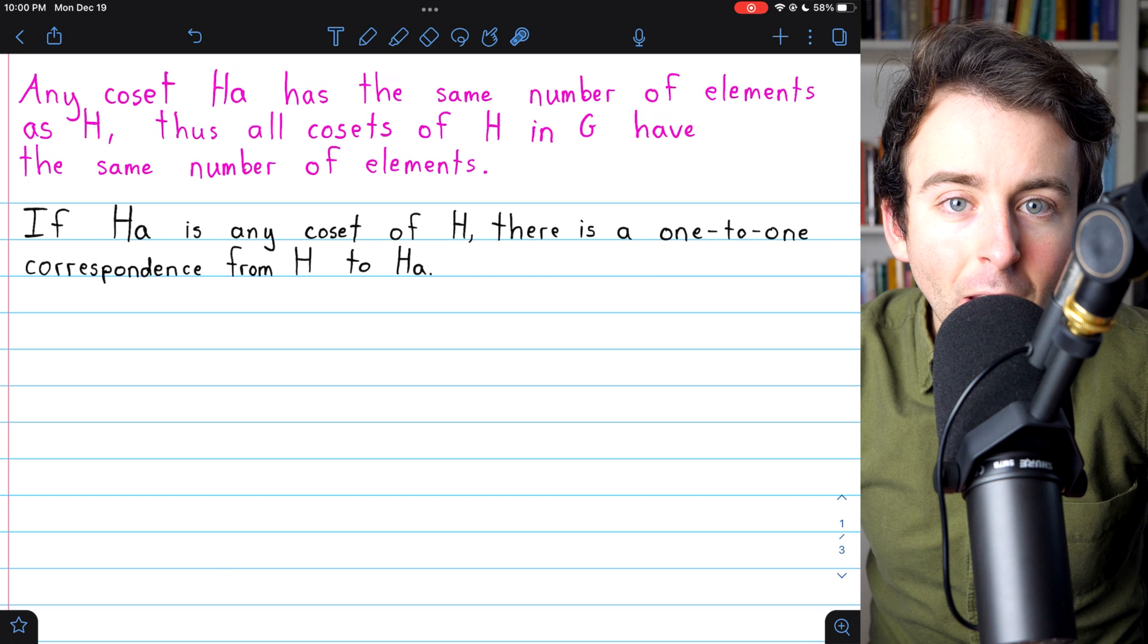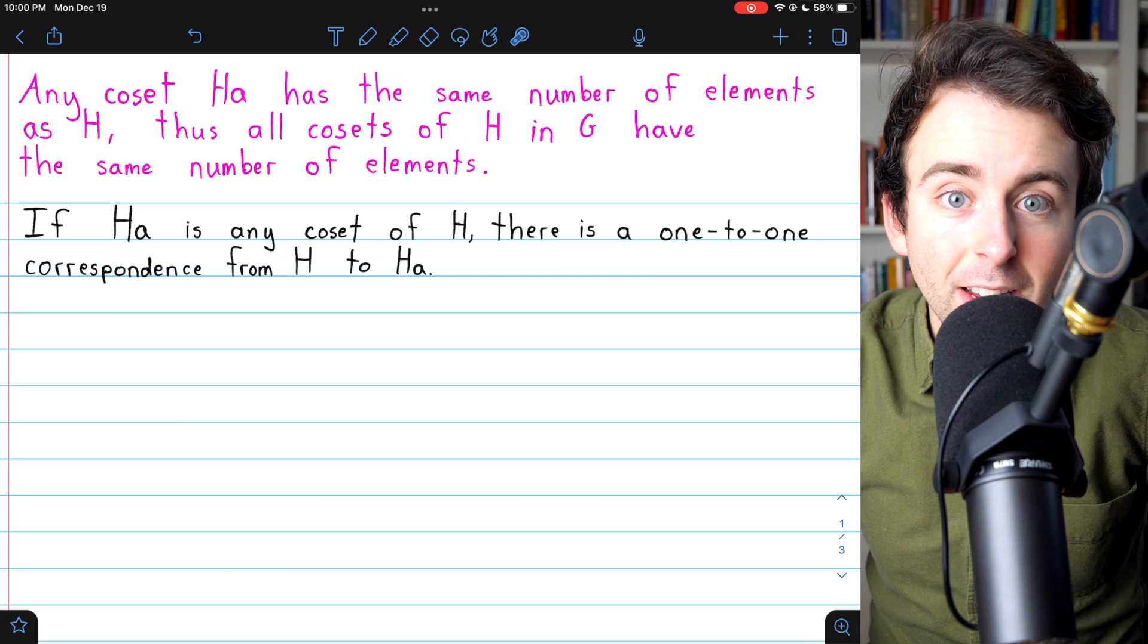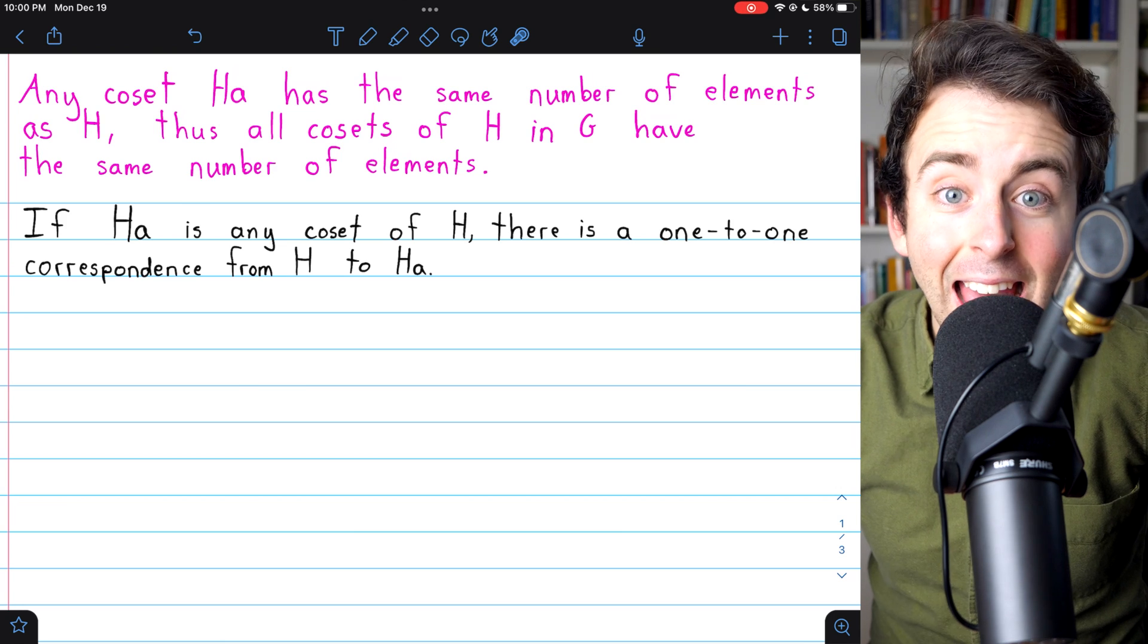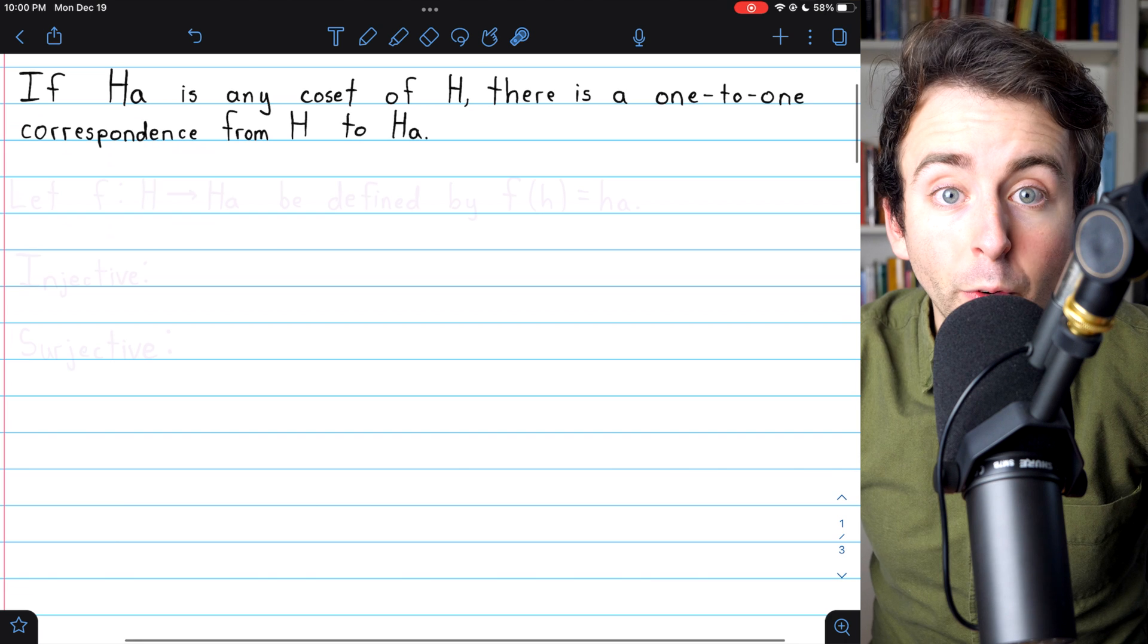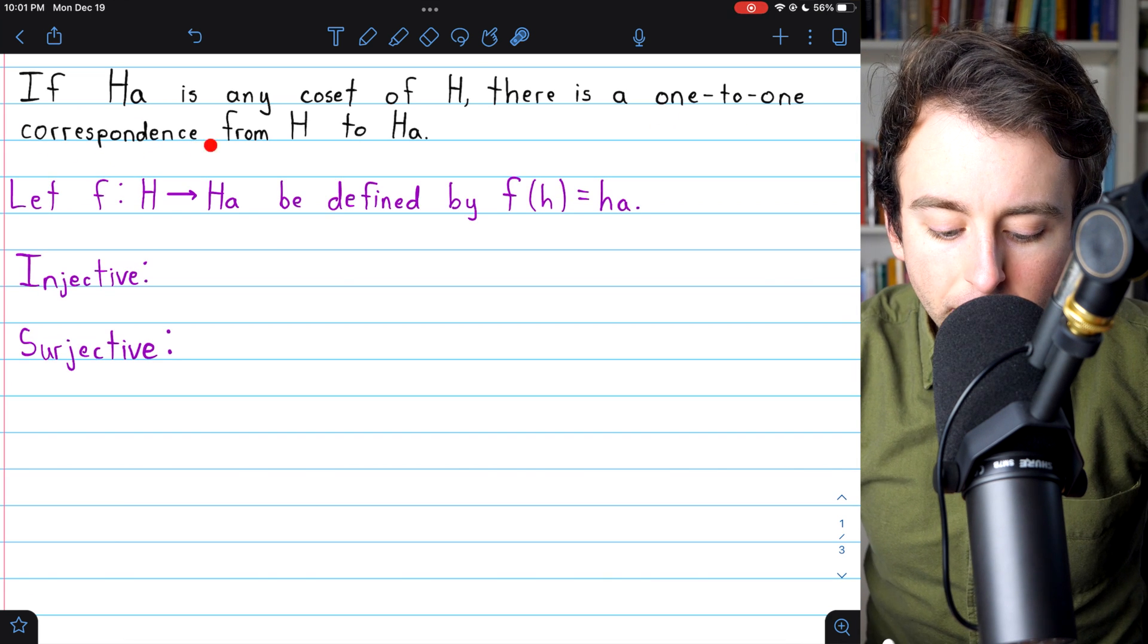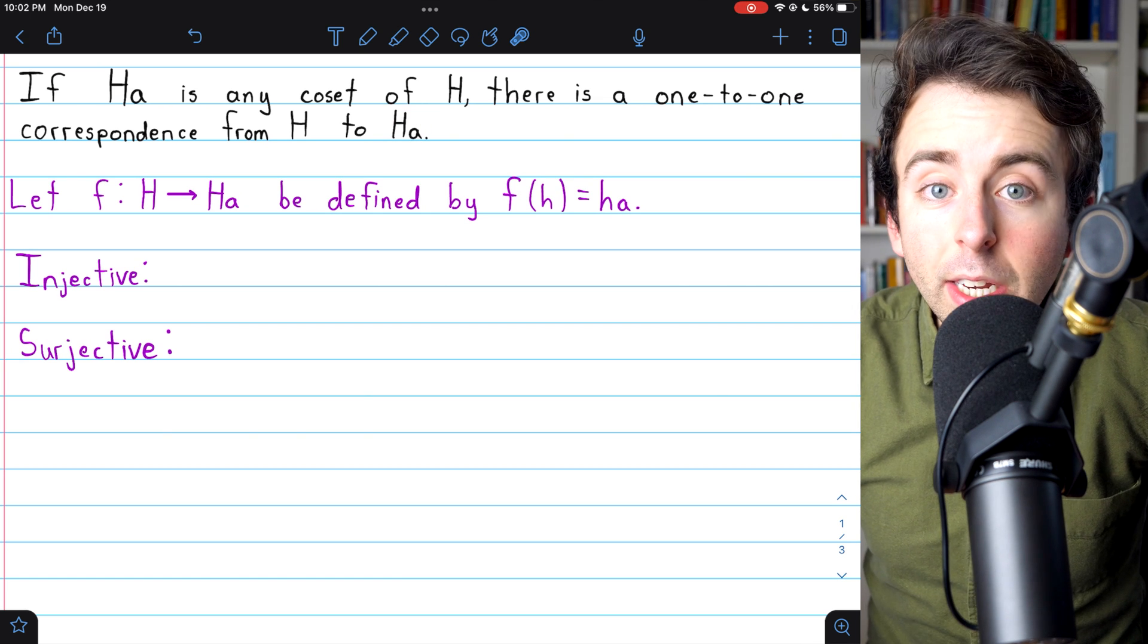So all cosets of H in the containing group G will have the same number of elements, because all the cosets of H have as many elements as H, and so all the cosets of H have the same number of elements as each other. Let's get into the proof.